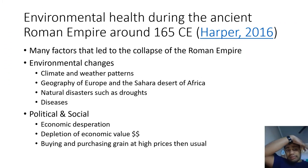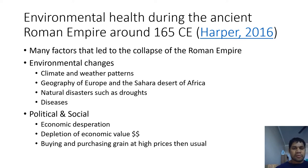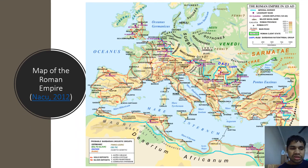Environmental health during the Roman Empire around 165 CE shared some factors with ancient Egypt, but much was due to climate and weather patterns affecting Egypt as a territory of the Roman Empire — its breadbasket. As a result, the economic value of the Roman Empire would decline, causing things to go out of control and people to make irrational decisions to stay viable. This map shows the Roman Empire during that time period.